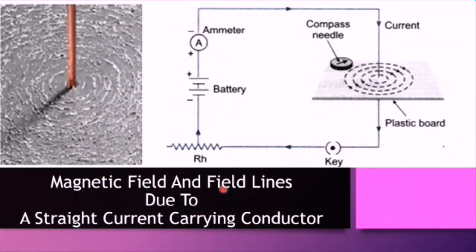Now, magnetic field and field lines due to a straight current-carrying conductor. Field patterns can be shown using iron filings or a plotting compass. This diagram shows a complete circuit in which a wire is connected to a battery, a key, and a variable resistor — also known as a rheostat — which is used to change the resistance and therefore the current in the circuit, to see the effect of current on the magnetic field.